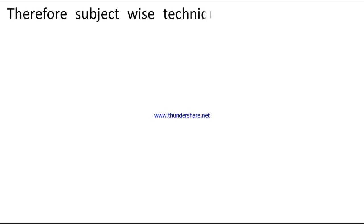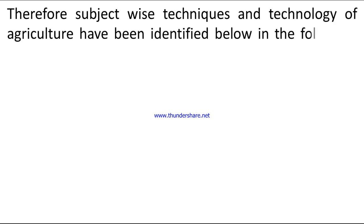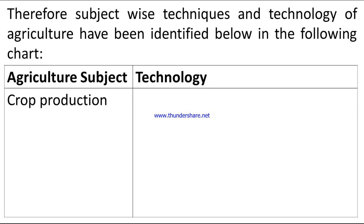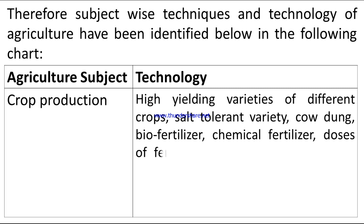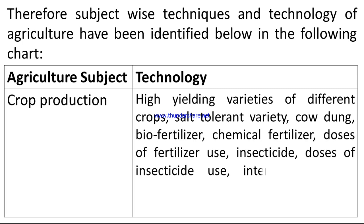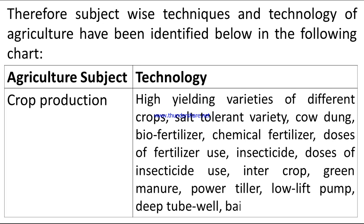Answer 3: Subject-wise techniques and technologies of agriculture are identified in the following chart. Crop production technologies include: high yielding varieties of different crops, salt tolerant varieties, cow dung bio-fertilizer, chemical fertilizer, doses of fertilizer use, insecticide, doses of insecticide use, intercrop, green manure, power tiller, low-lift pump, deep tube well, baling vessel, tub, etc.